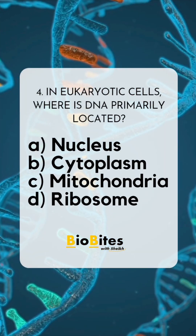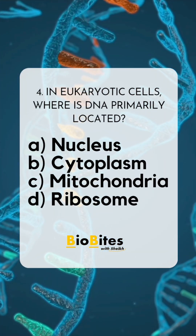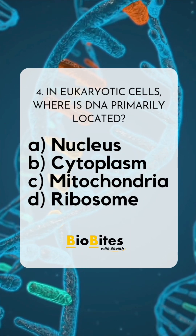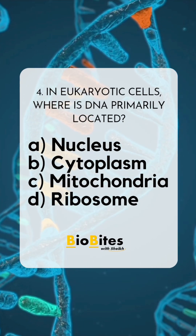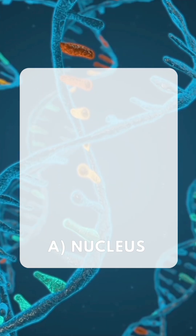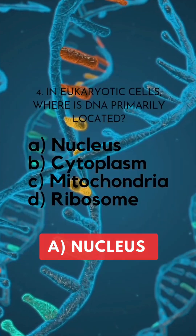In eukaryotic cells, where is DNA primarily located? A. Nucleus. B. Cytoplasm. C. Mitochondria. D. Ribosome. Correct answer: A. Nucleus.